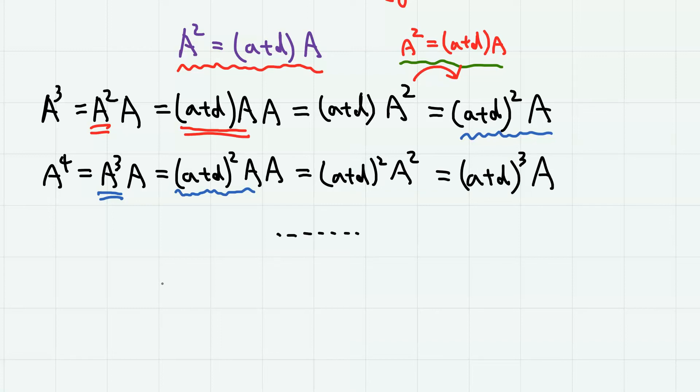and we can already see the pattern here. So generally, A to the power of N can be expressed as A plus D to the power of N minus 1 times matrix A, where N is a natural number equal to or greater than 2.